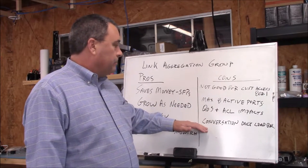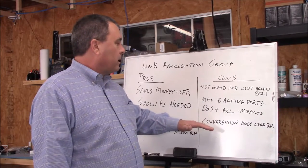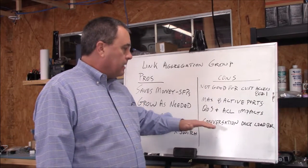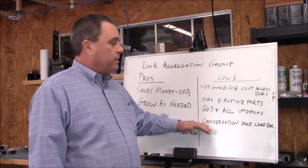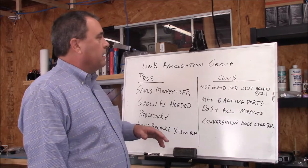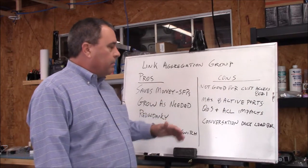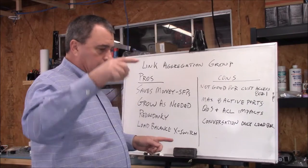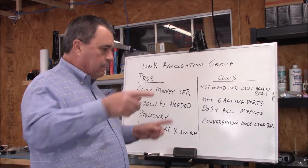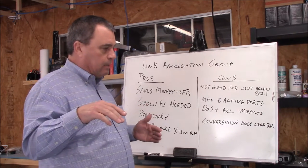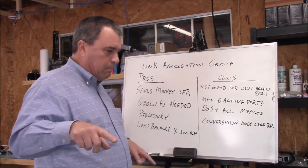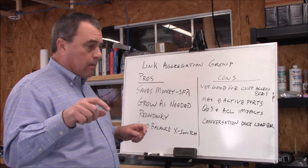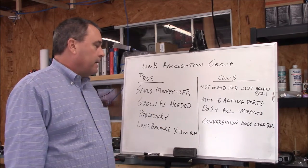Another con is that it does load balancing, but only per conversation. If you've got an originating MAC address and a terminating MAC address sending packets, it's not going to load balance that across all the ports — it will pick one link and that whole conversation between those two endpoints stays there. You have to take that into consideration.